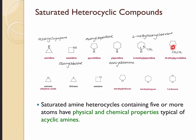When you have substituents directly attached to the nitrogen, you have to specify them with an 'N' in front. For this compound, we have one, two, three, four, five atoms in the ring structure, so this is aza cyclopentane, and we have an ethyl group directly attached to nitrogen, therefore this should be N-ethyl aza cyclopentane.